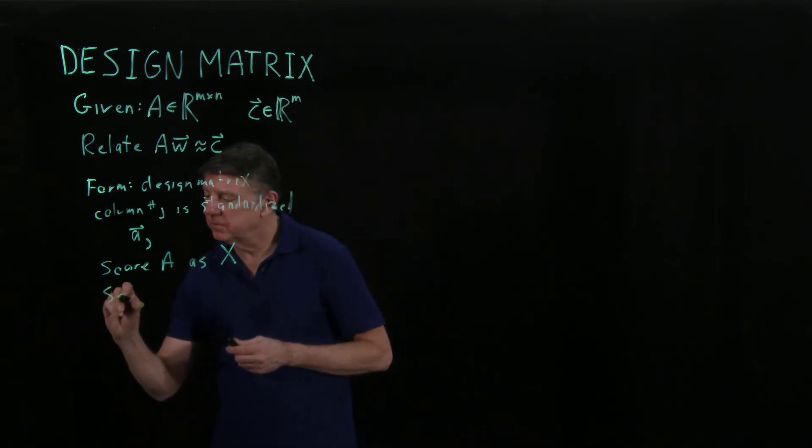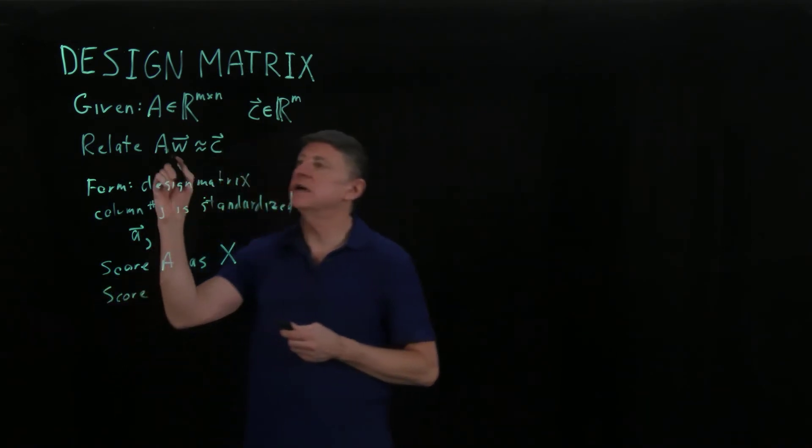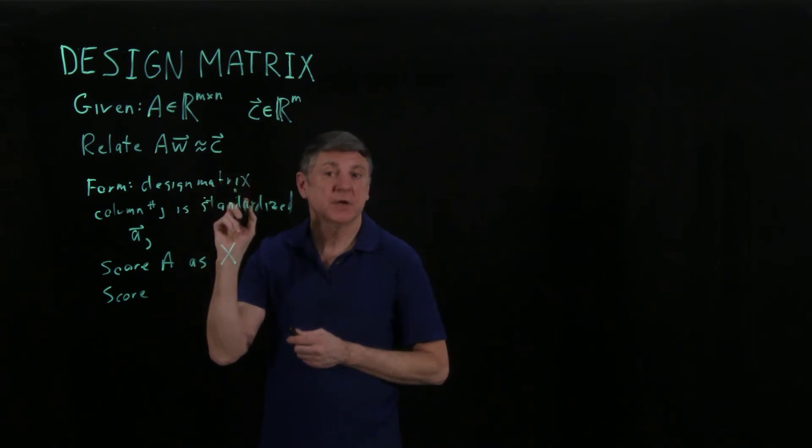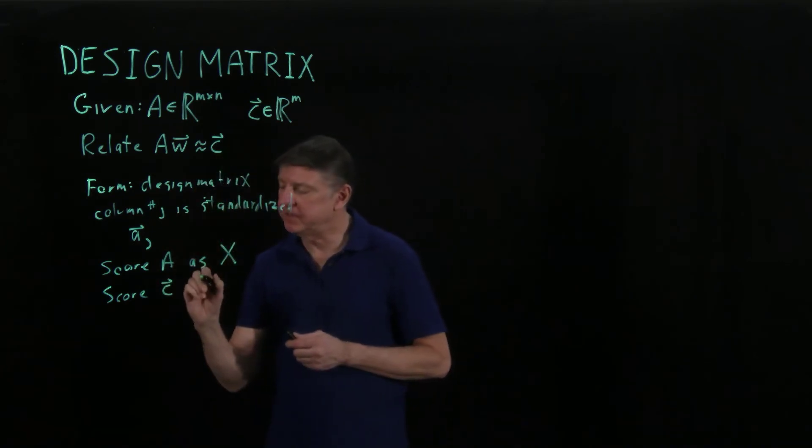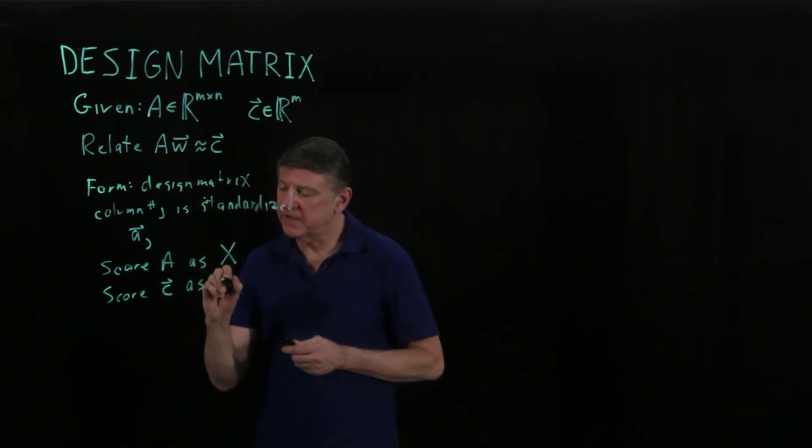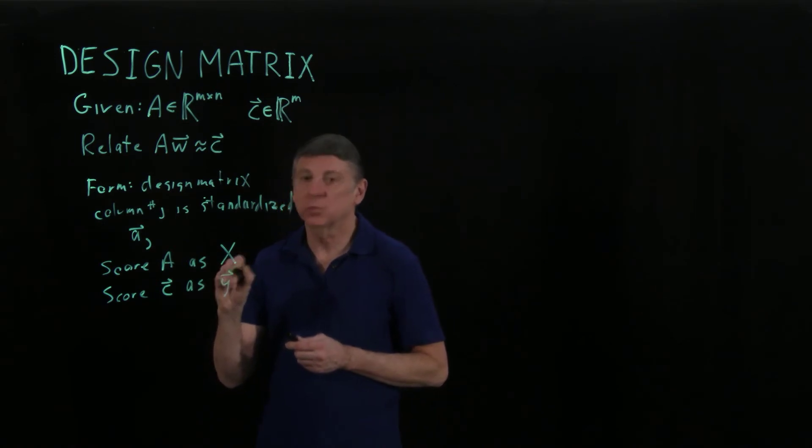If we're scoring one side of this relation, we have to score the other side. So we'll score our vector C of dependent readings, and call that vector Y.